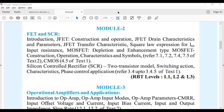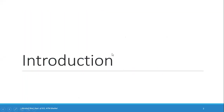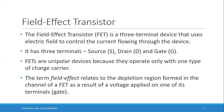This Field Effect Transistor is a three-terminal device which uses electric field to control the current flowing through the device. We have also studied another three-terminal device, that is a BJT — there it was the current, specifically the base current, that was controlling the current flowing through the device. FET has three terminals: source, drain, and gate.